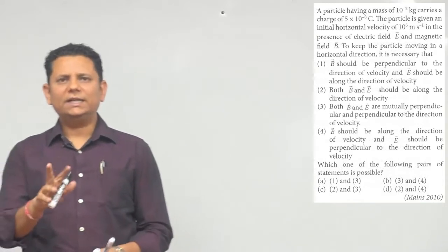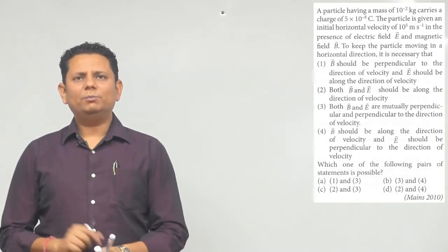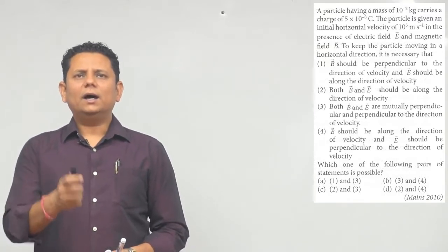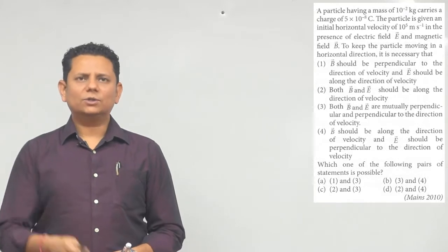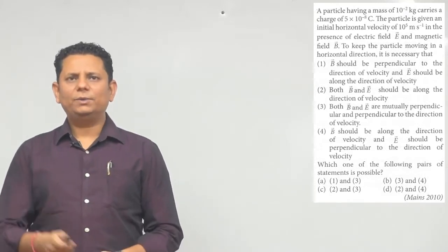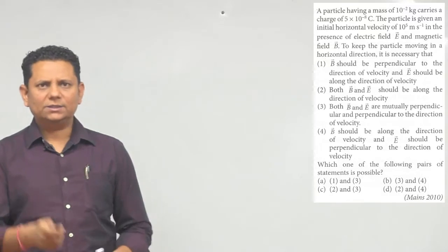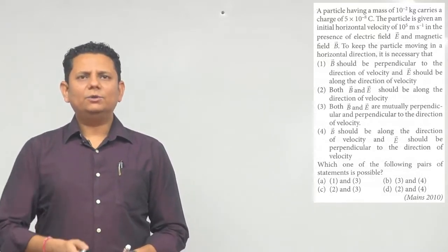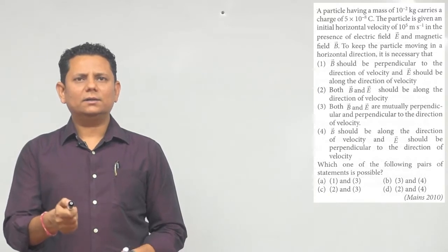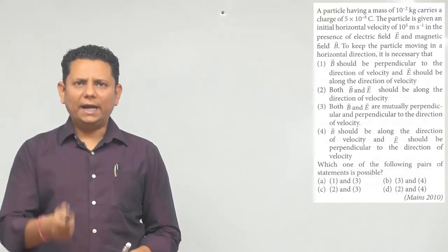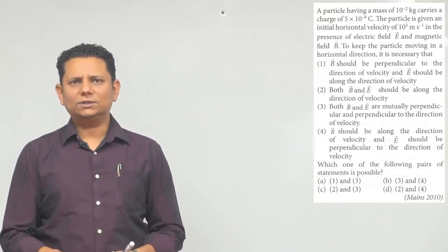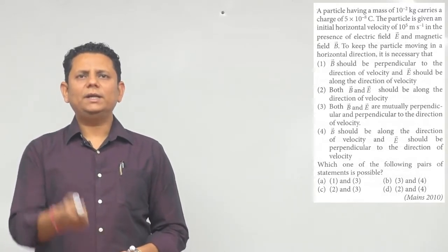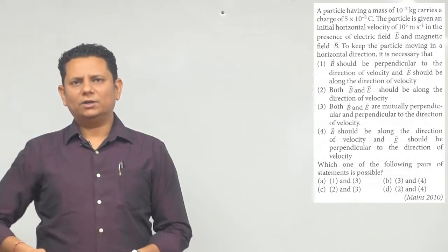Option 1: B should be perpendicular to the direction of velocity and E should be along the direction of velocity. Option 2: Both B and E should be along the direction of velocity. Option 3: Both B and E are mutually perpendicular and perpendicular to the direction of velocity. Option 4: B should be along the direction of velocity and E should be perpendicular to the direction of velocity.